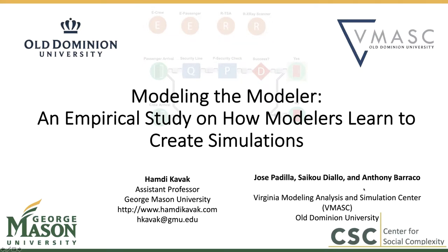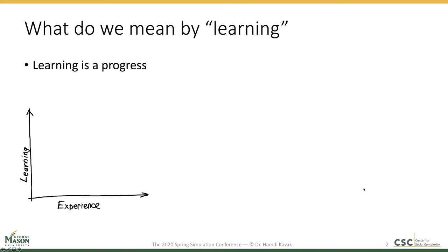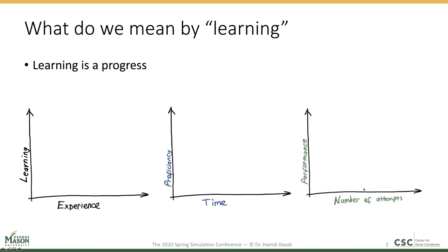In this study, we explored the learning progress of a modeler from an empirical perspective. When I say modeler, I mean a person who is learning to develop a simulation model, like a student. Learning is simply a progress, but it can be formulated in different forms. For instance, sometimes it is associated with experience, sometimes it is considered proficiency on something that changes over time, or performance that has the potential to change based on the number of attempts.